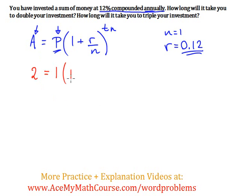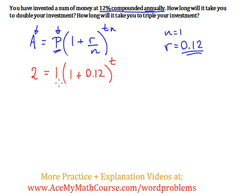So here we have 1 plus 0.12 divided by 1. Anything divided by 1 is just the same thing, so I just don't even need to put the 1 there. Then we have T times N, which is 1 again — T times 1 is just T. We can simplify, so we have 2 equals 1 times 1.12 to the power of T. 1 plus 0.12 is just 1.12 to the power of T. Since 1 times anything is just the same thing, we don't need to write the 1 anymore.